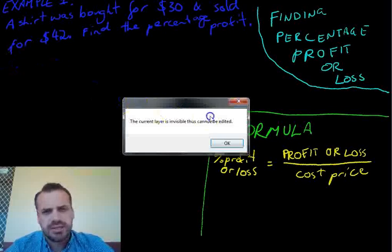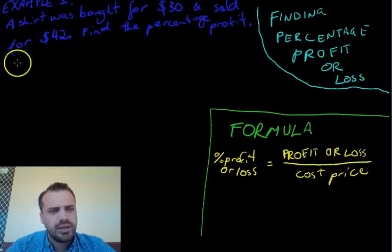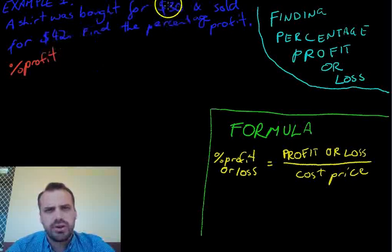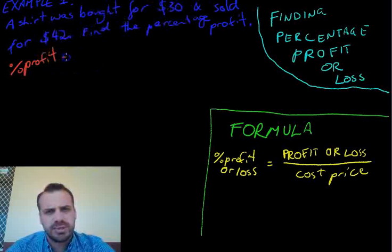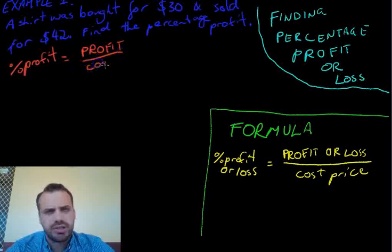Now, our formula says that the percentage profit, in this case it's not a loss, it's a profit. We bought it for $30 and we sold it for $42. So the percentage profit is equal to the profit, the amount of profit we made, divided by the cost price.